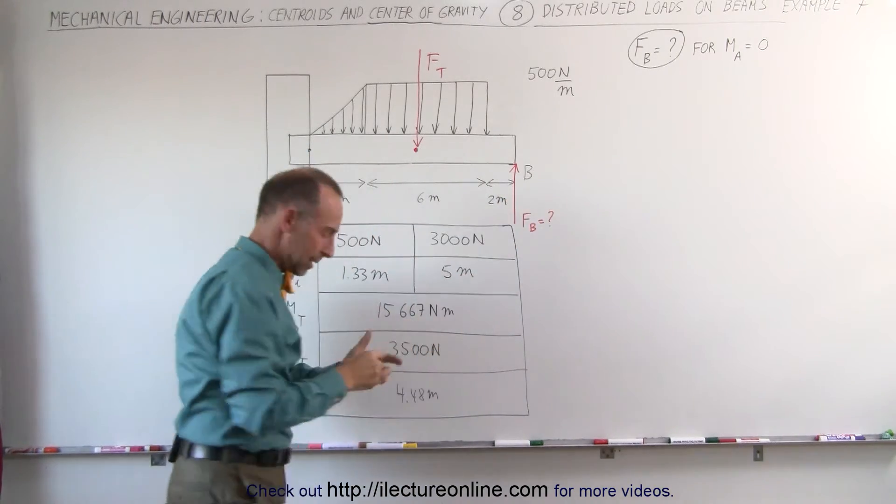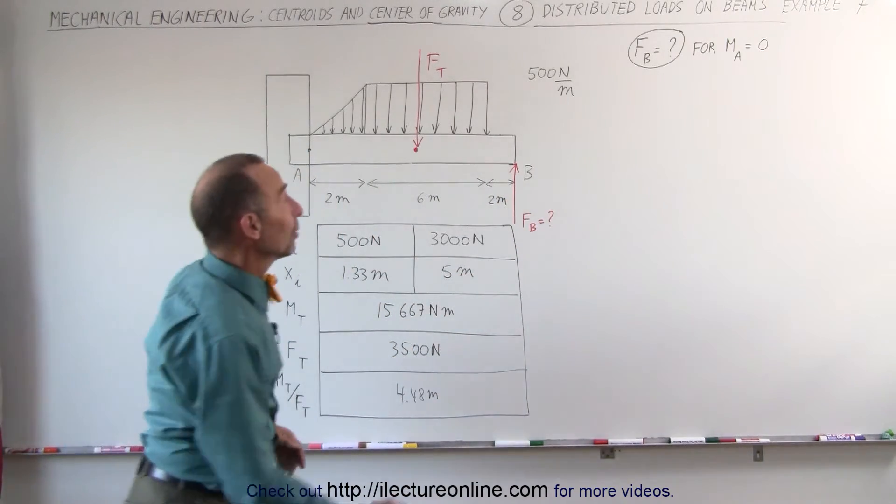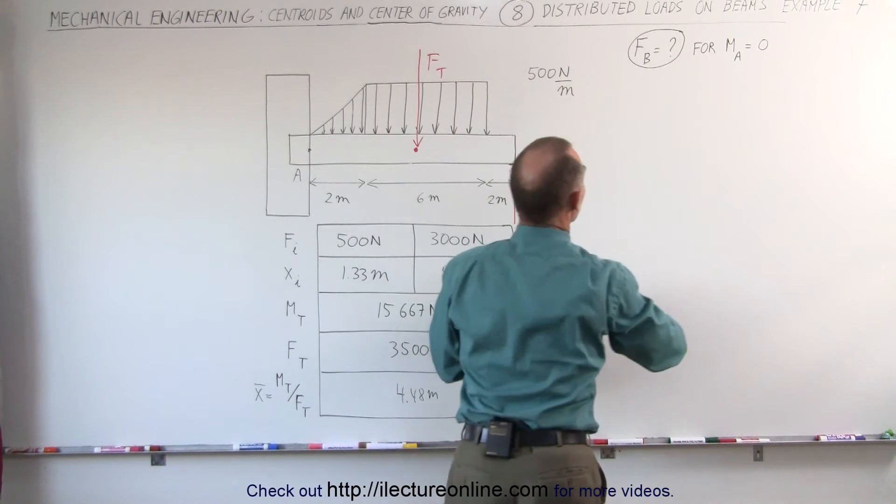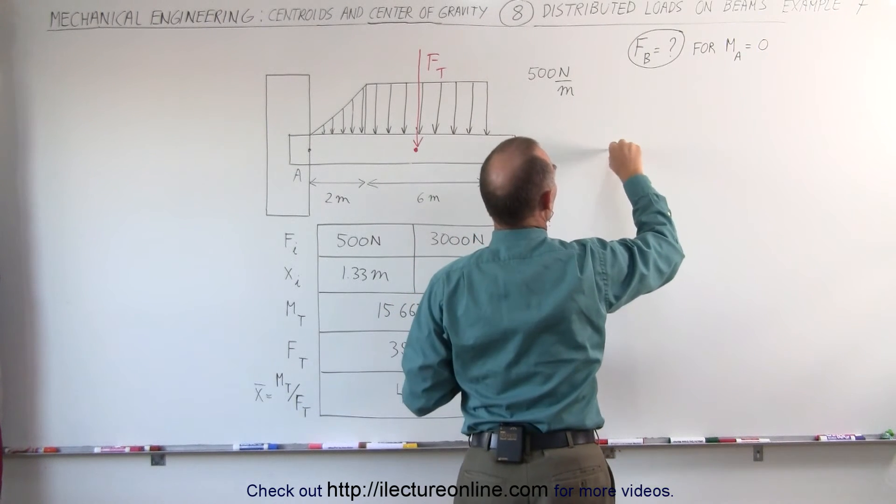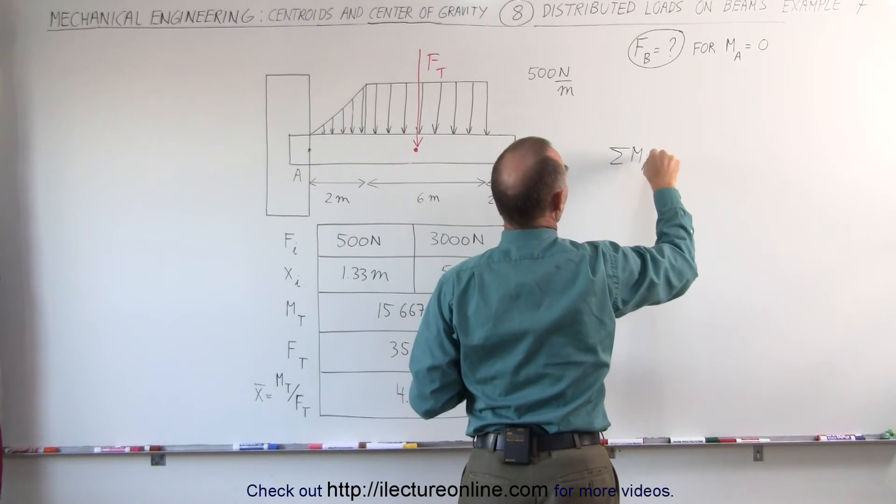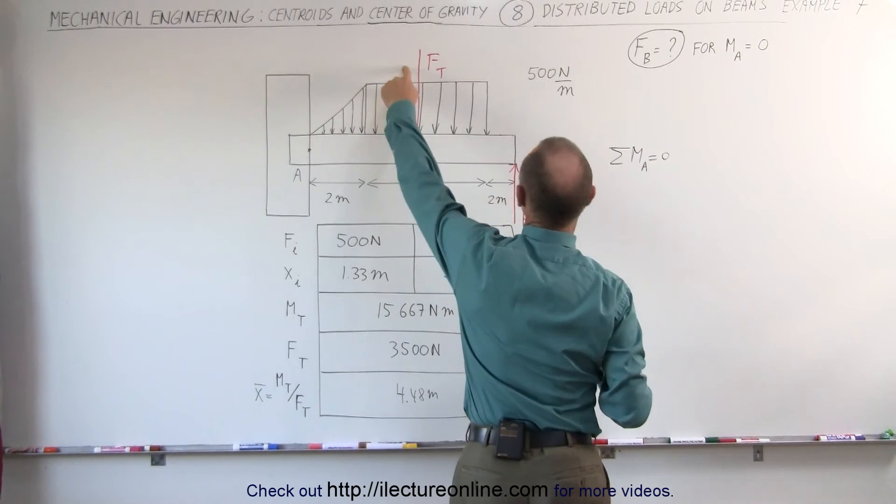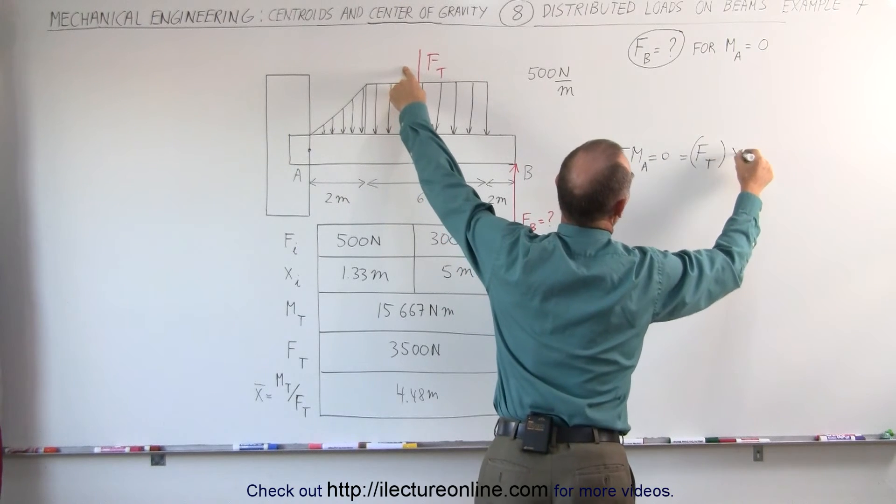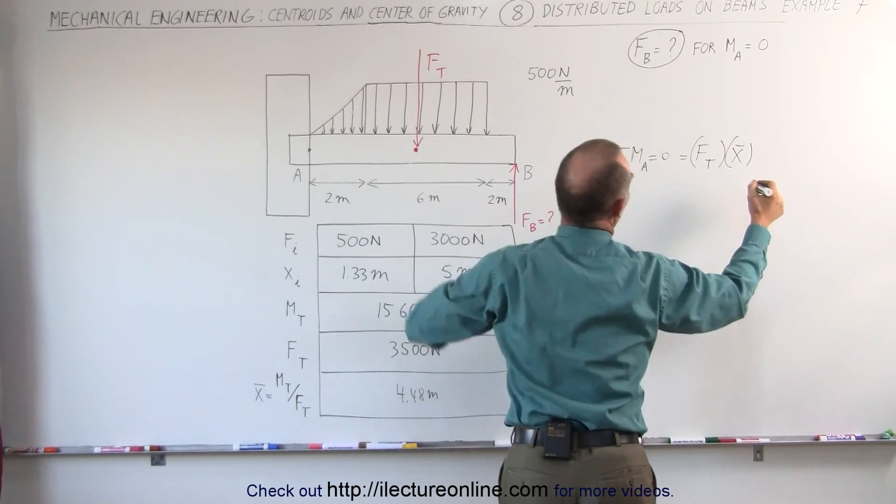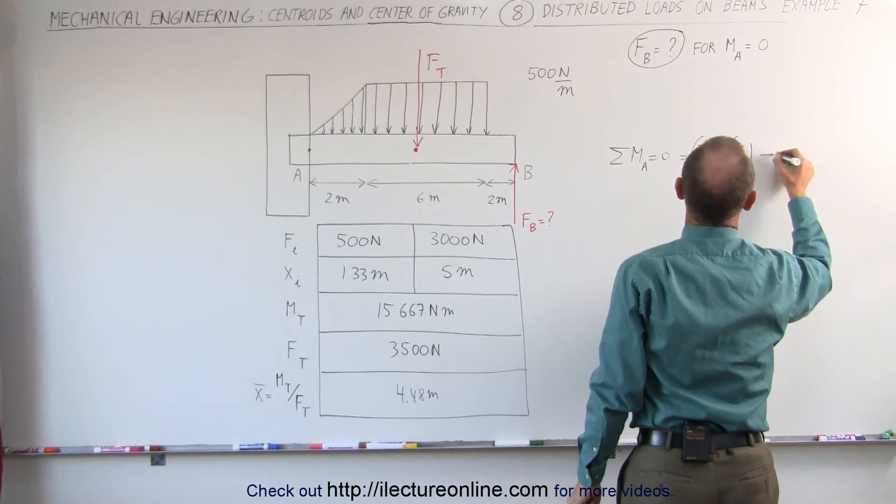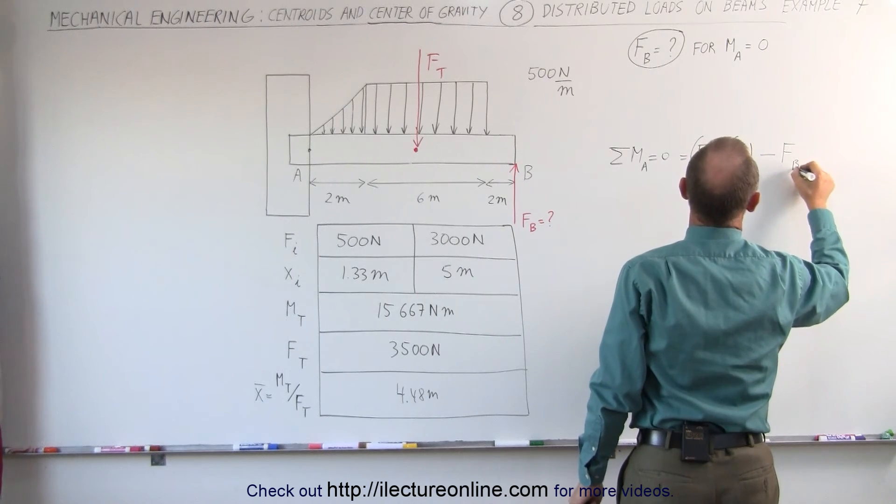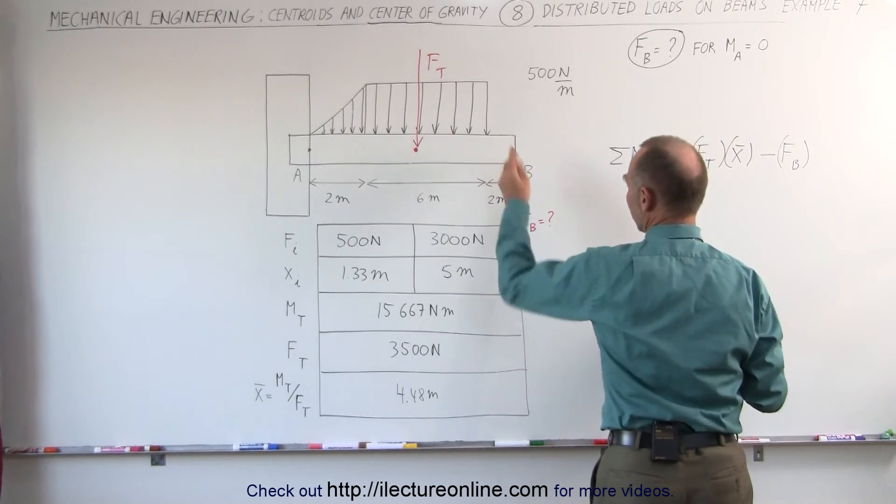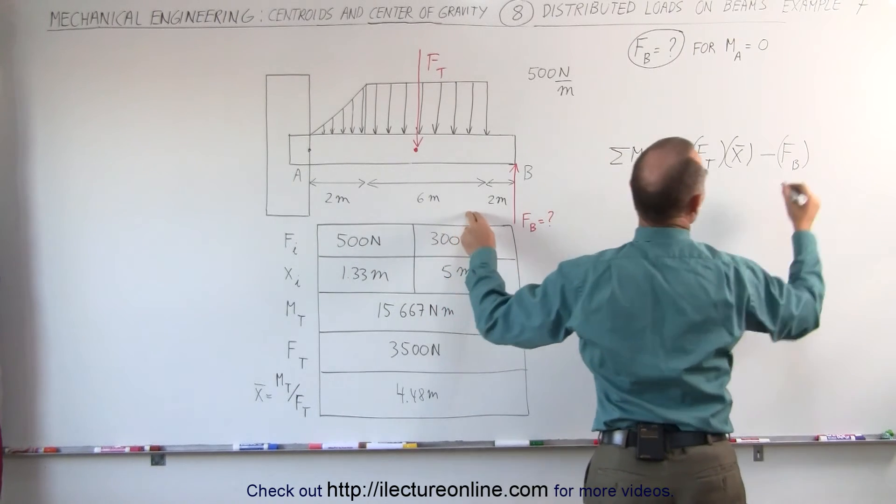Now we need to find force B. The condition is that the moment at A is equal to zero. The sum of the moments at A adds up to zero. And that is contributed by the total force, F total, times the distance to the centroid, minus force B, because it's in opposite direction, multiplied times a total of 10 meters.